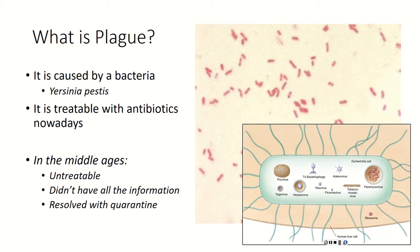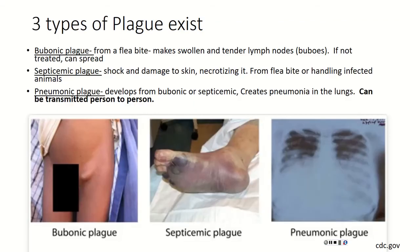We're doing quarantine so we can get a leg up on the information, the science, get our hospitals ready — so that when we're ready to get back out there, we're going to do a good job. Now there are three different types of plague.